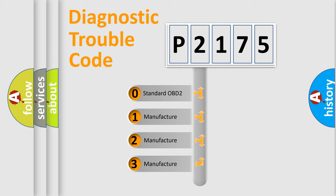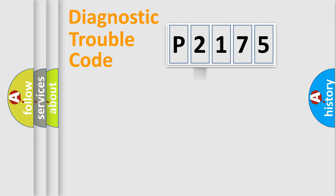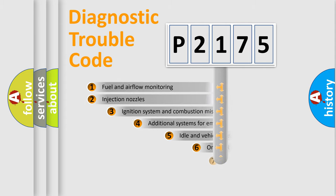If the second character is expressed as zero, it is a standardized error. In the case of numbers 1, 2, or 3, it is a manufacturer-specific expression of the car-specific error.